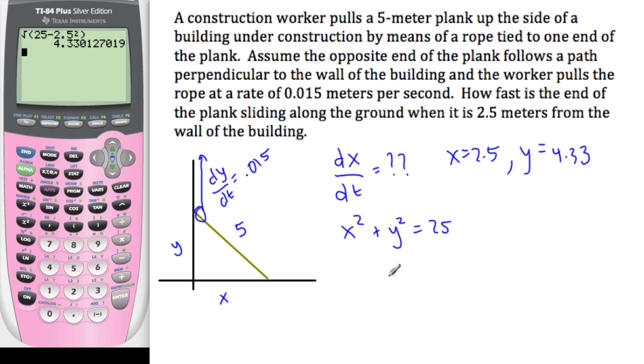So now I can differentiate this, so 2x times dx/dt, this is because I'm taking the derivative with respect to time, so this is treated as a chain rule, plus 2y times dy/dt, and the derivative of 25 with respect to anything is going to be 0.